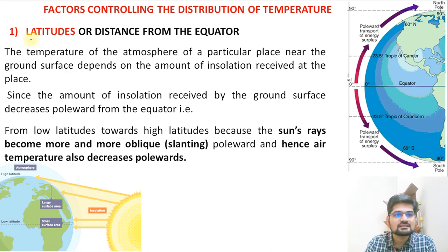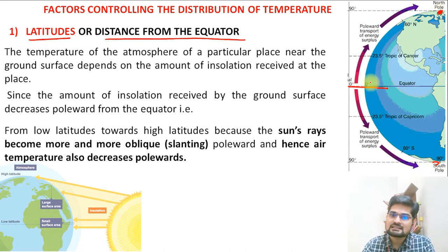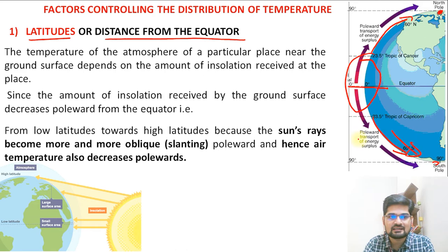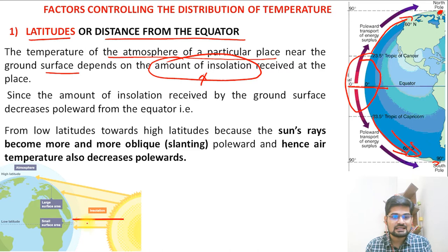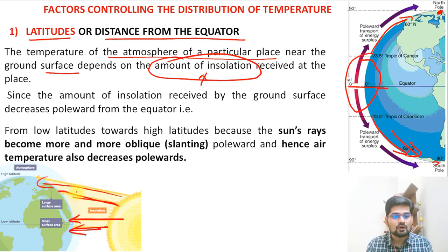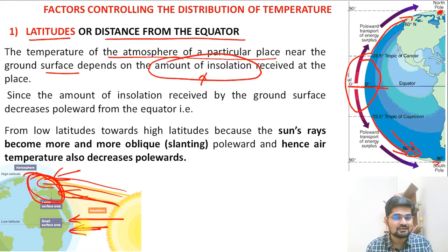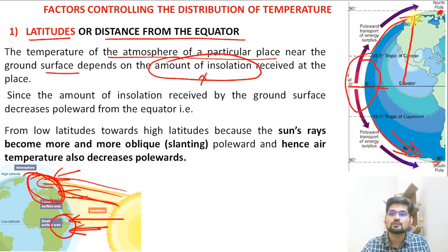Returning to the first factor — latitude or distance from equator — the temperature of the atmosphere near the ground surface depends on the amount of insolation, which varies across latitudes. When solar rays are vertical, energy is concentrated in a smaller area; when oblique or slanting, the energy is spread over a larger area. That factor determines the differences in temperature from equator to poles across various latitudes.